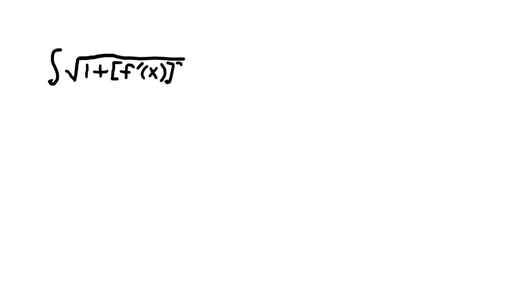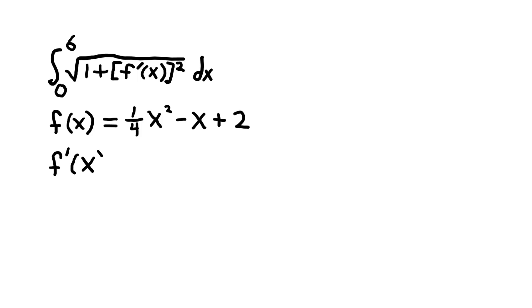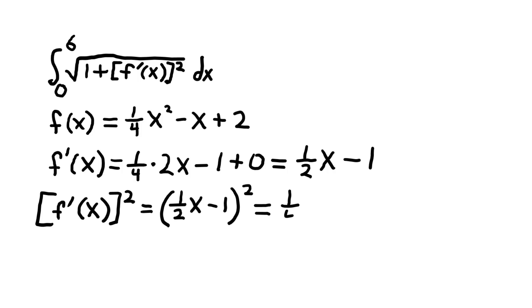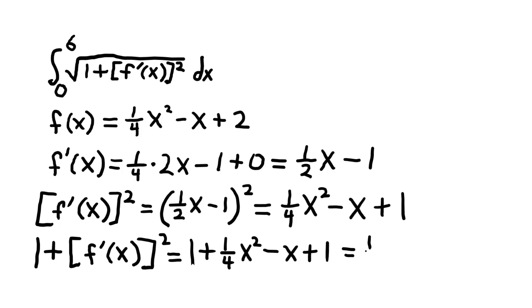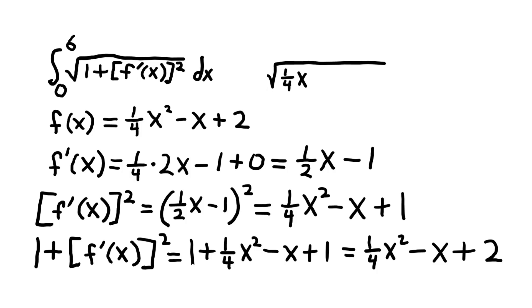We have the integral of the square root of 1 plus f prime of X squared DX from X equals 0 to X equals 6. Our function is f of X equals one-fourth X squared minus X plus 2, so its derivative is one-half X minus 1. We square that and get one-fourth X squared minus X plus 1. Then we add 1 to that, which gives one-fourth X squared minus X plus 2. We put that under a radical and integrate it from X equals 0 to X equals 6.